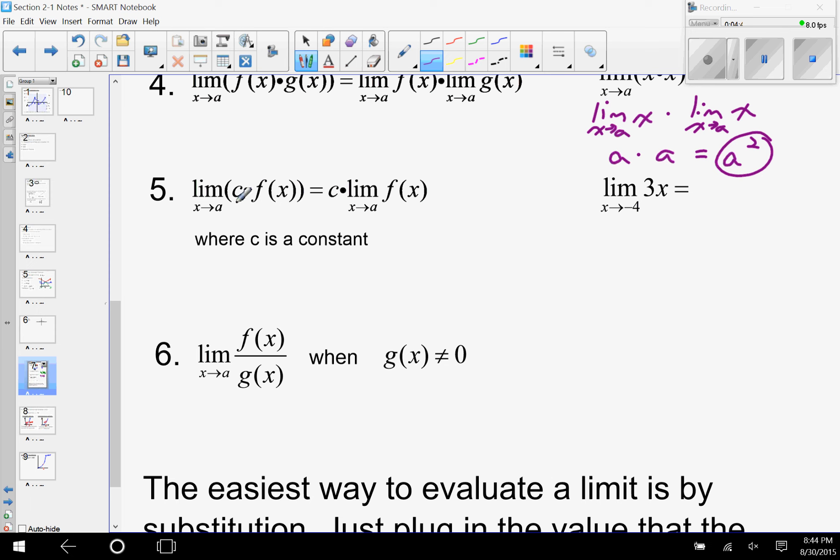It's the idea that if I'm taking the limit of a product but one of those is a constant, this is kind of a shortcut for property one and property four together. But we are going to take this constant and move it outside. And so here, the limit as x approaches -4 of 3x would be 3 times the limit as x approaches -4 of x. But then the limit as x approaches -4 of x is -4, and 3 times -4 is -12.